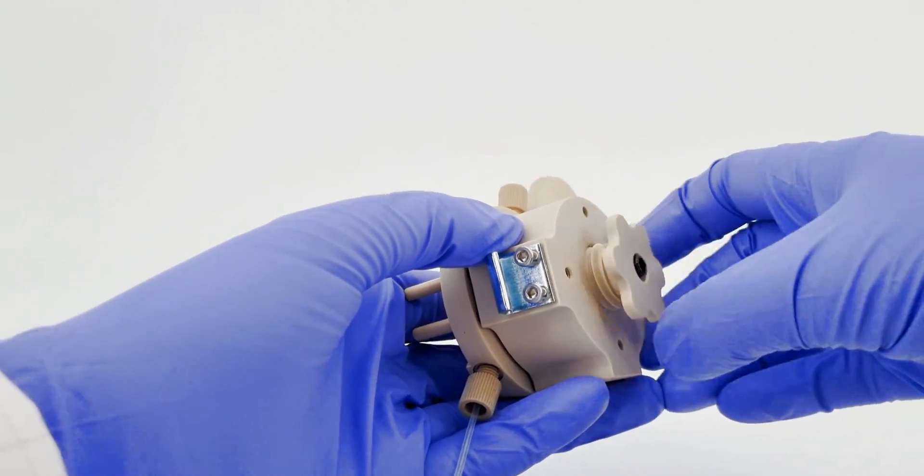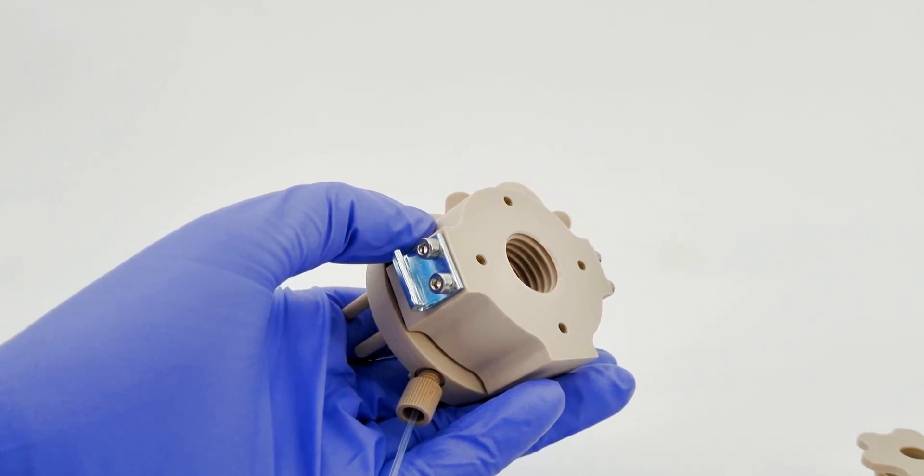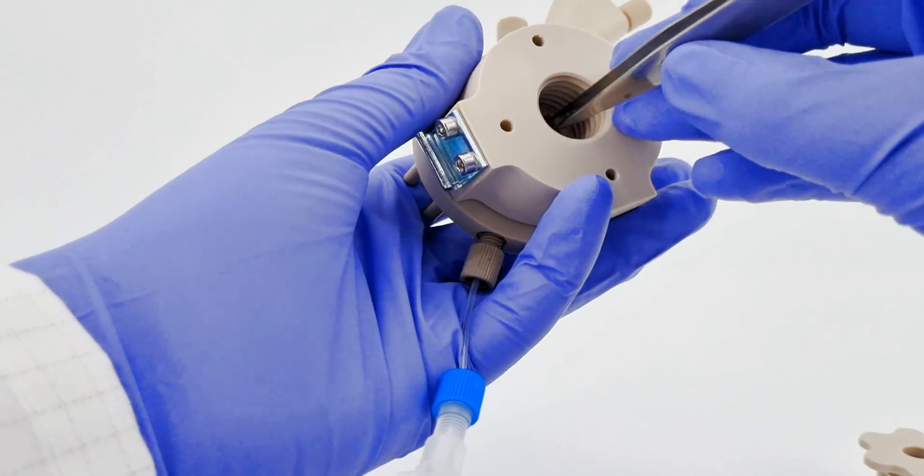Next, let's get those polarizing electrodes out. Unscrew the holder and remove the piston. And using your tweezers, take out the plate electrode.